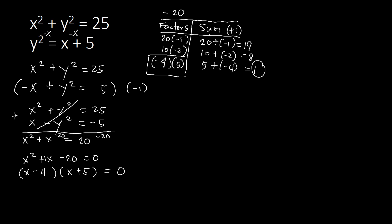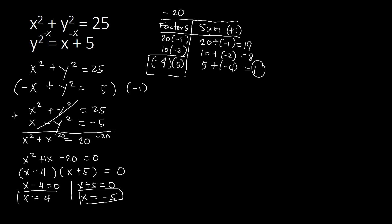We solve for x by equating each factor to zero: x minus 4 equal to 0 gives x equal to 4, and x plus 5 equal to 0 gives x equal to negative 5. Those are our two values of x. Now we proceed to solve for y.